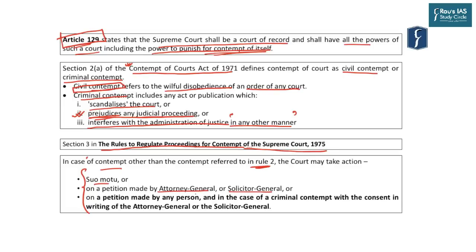Two key points: first, consent in writing of the Attorney General or Solicitor General is required only for criminal contempt. Second, it is not an either-or choice — you can go to the Solicitor General only if the Attorney General is not available. In the Swapna Bhaskar case, the Attorney General declined consent, and when the petitioner went to the Solicitor General, it was clarified that the Solicitor General, being junior to the Attorney General, cannot overrule the AG's decision.